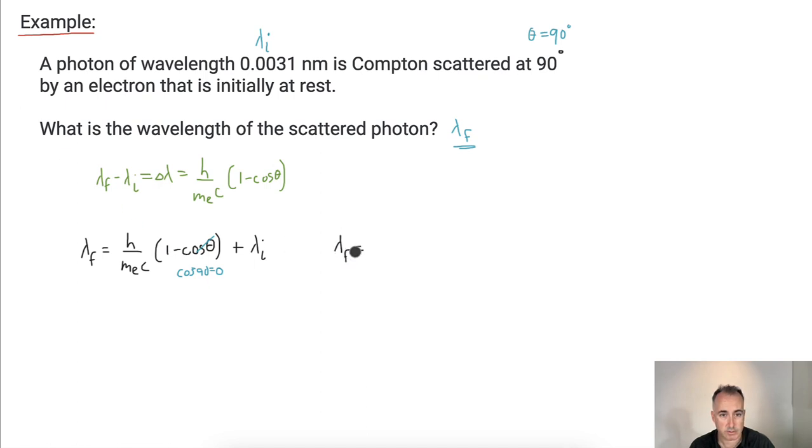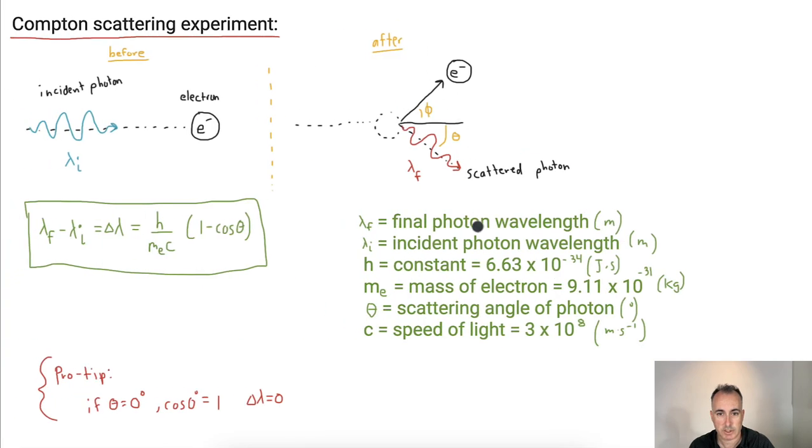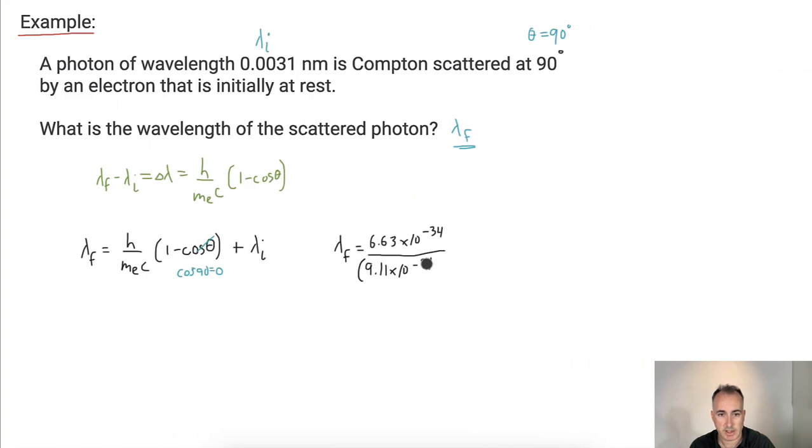So I have lambda f equals h, which is 6.63 times 10 to the minus 34, all that divided by m_e, the mass of the electron, which is 9.11 times 10 to the minus 31, all that times the speed of light, which is 3 times 10 to the 8. All that times just 1 because 1 minus 0 is just 1. And all that plus...